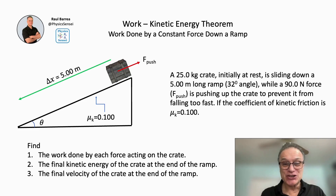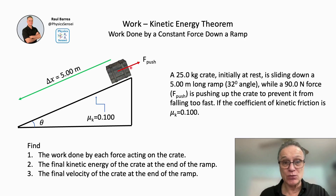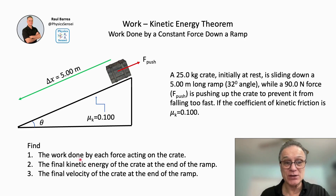Welcome! In this video I'll show you how to solve this problem of an object sliding down a ramp under a push force and under the action of a friction force. A 25-kilogram crate initially at rest at the top of this ramp is sliding down a five-meter-long ramp at a 32-degree angle inclination, while there's a push force F of 90 newtons pushing up the ramp to prevent the crate from falling too fast. The coefficient of kinetic friction is 0.1. We want to find the work done by the forces, the final kinetic energy, and the final velocity at the end of the ramp.